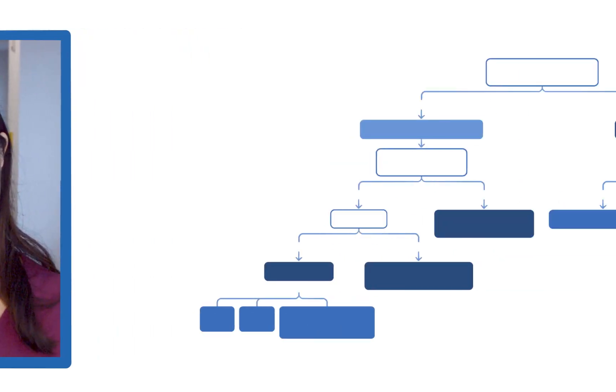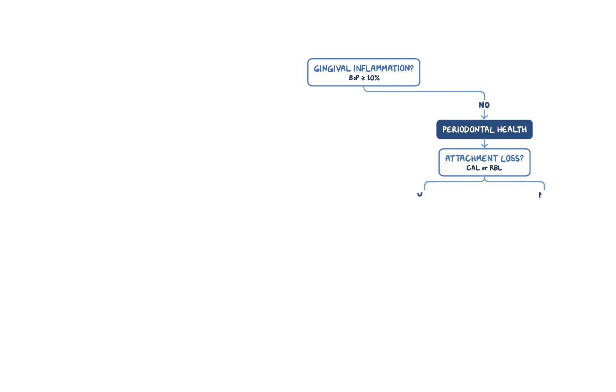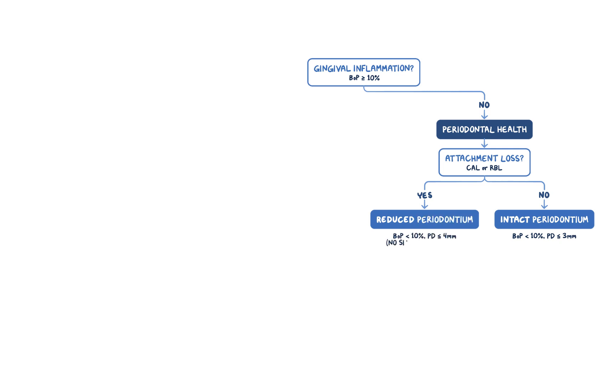Now let's take a look at this flow diagram. Before you use this flow chart, you have to first rule out any non-periodontitis cause of attachment loss, because this guideline will not work for those. The first question to ask is: is there gingival inflammation defined by bleeding on probing of 10% or more? If the answer is no, then there is minimal inflammation and you have periodontal health. Based on attachment loss and bone loss, you can further classify as periodontal health on an intact or reduced periodontium. The probing depth for reduced periodontium is set at 4 mm or less, because achieving 3 mm or less after treatment is very difficult.